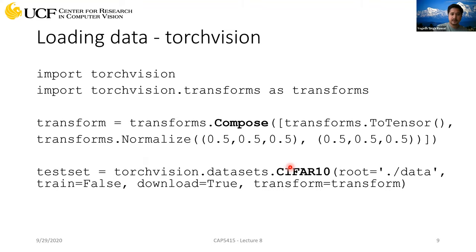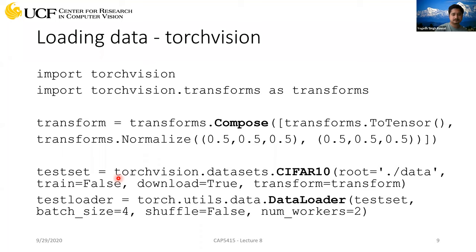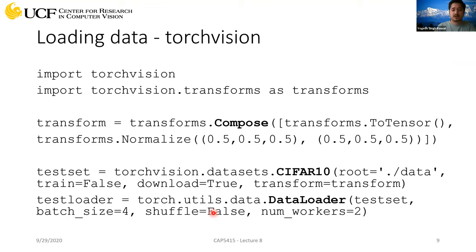For test data, you create a DataLoader similarly, setting the train flag to false. In your testing data, you don't need shuffle because the order of samples doesn't matter — there's no backpropagation or loss computation, it's just a feed forward. Whatever your order is, it's not going to change what results you are getting.